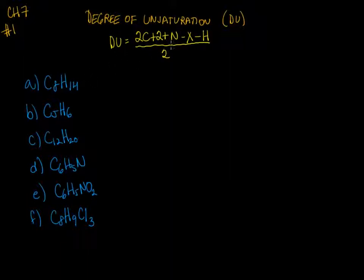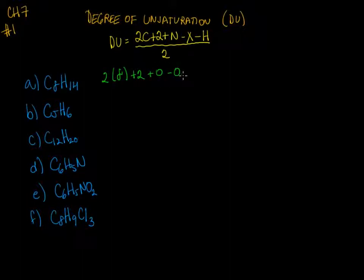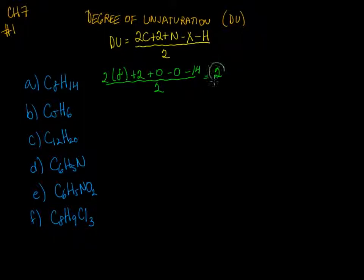For part A, we have two times eight carbons, plus two, plus zero nitrogen, subtract zero halogens, subtract 14 hydrogens, and divide it all by two. You're always going to get a whole number for these calculations. Here I get two.